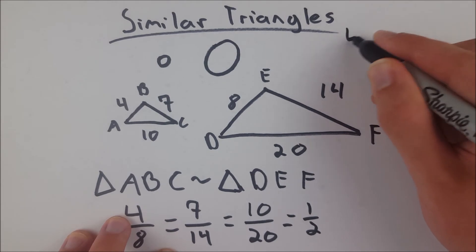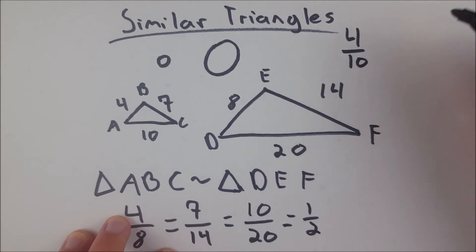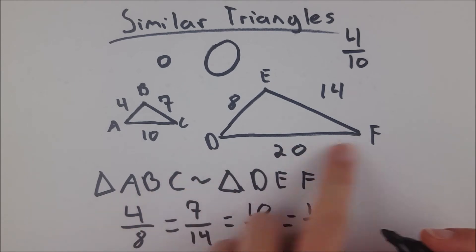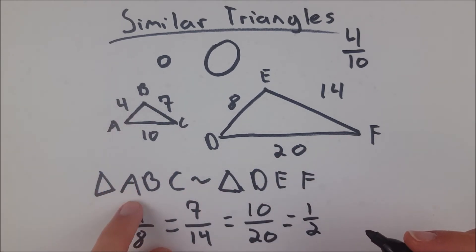I'll put it up here, 4 over 10. Now, if I take the corresponding pair of sides on this triangle, over here, I did AB to AC. So, here, I'm going to do DE to DF. There's DE, there's DF.